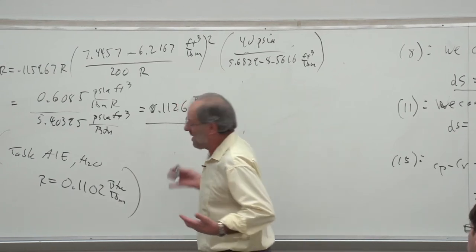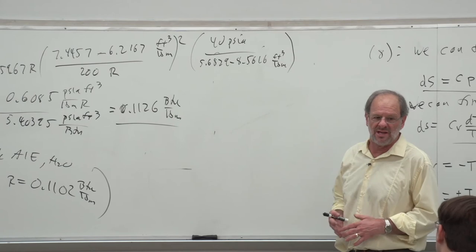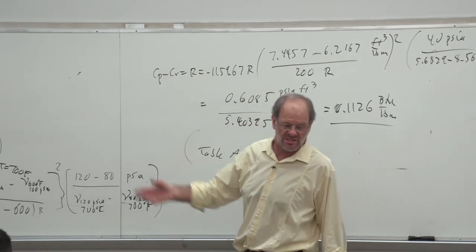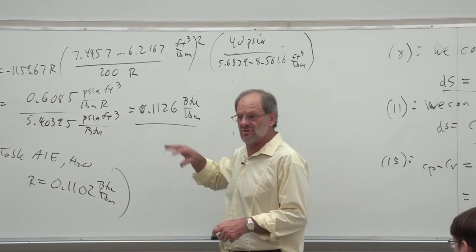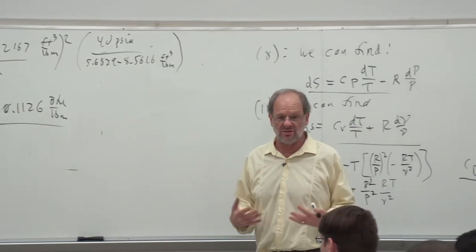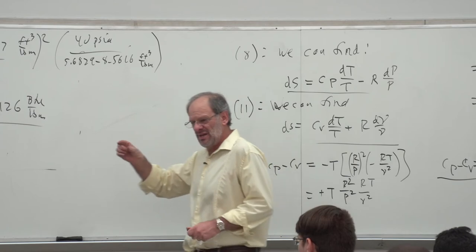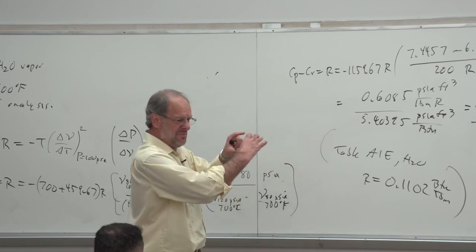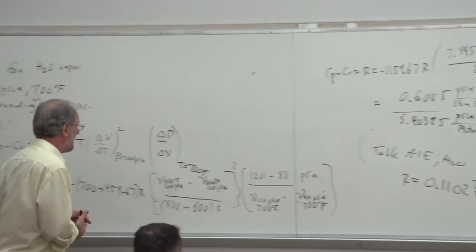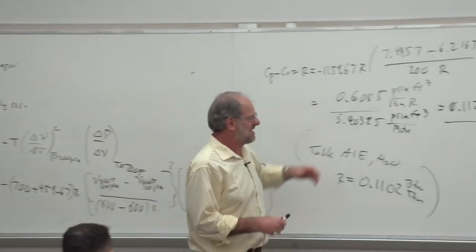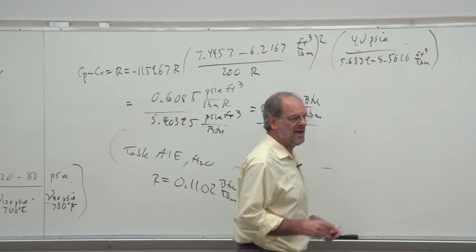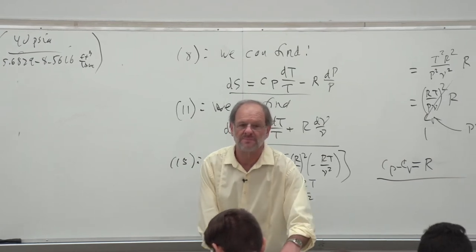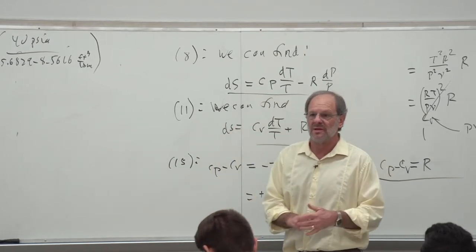The small error is probably because we're using such large bounds — 100°F on each side of temperature and 20 psia on each side of pressure. In a real research lab, the bounds would be very tight — maybe half a pound on pressure and just a degree on temperature — so the error would be much smaller. Nonetheless, this checks out fine. It's not perfect, but it illustrates the usefulness of these equations.